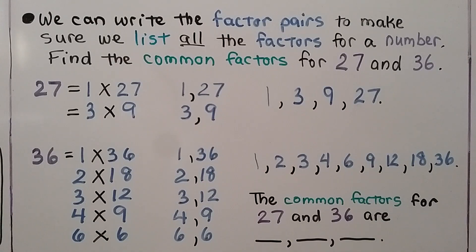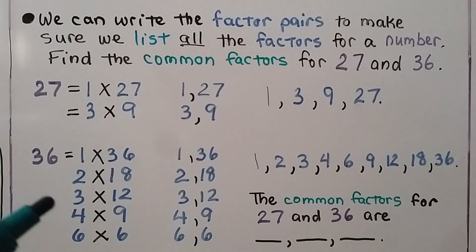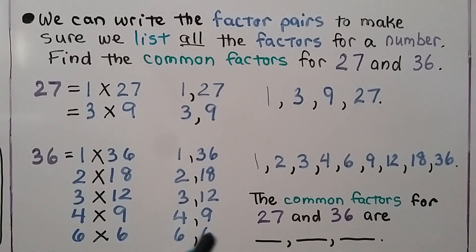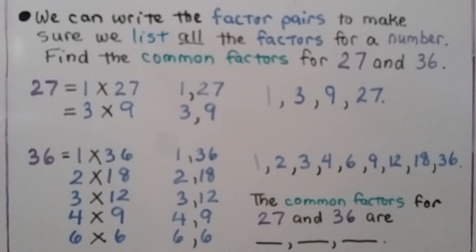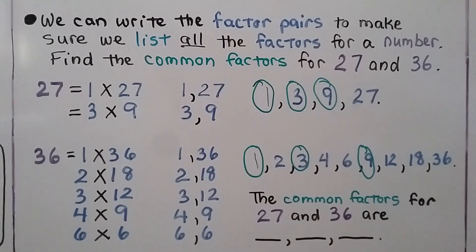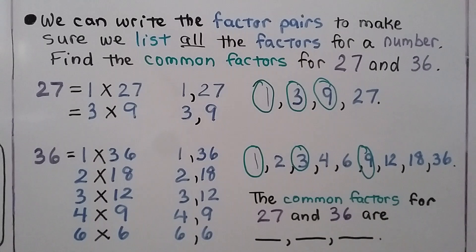We write factor pairs to make sure we list all factors. For 27: 1×27, 3×9, giving factors 1, 3, 9, 27. For 36: 1×36, 2×18, 3×12, 4×9, 6×6, giving factors 1, 2, 3, 4, 6, 9, 12, 18, 36 — noting we list doubles only once. Comparing both lists, both have 1, 3, and 9, so the common factors of 27 and 36 are 1, 3, and 9.